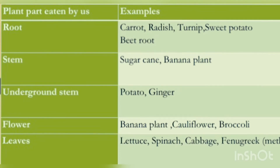Plant parts eaten by us. Root — examples: Carrot, Radish, Turnip, Sweet potato and Beetroot. Stem — examples: Sugarcane, Banana plant.